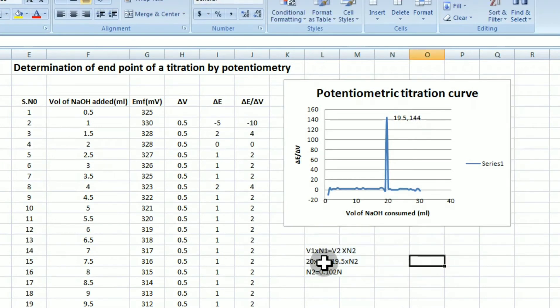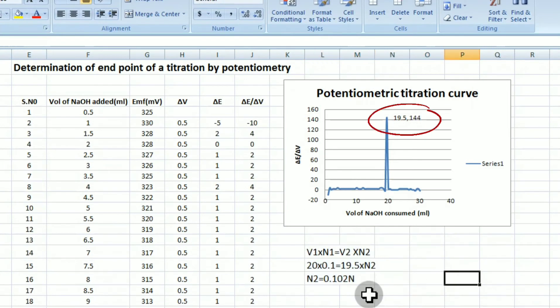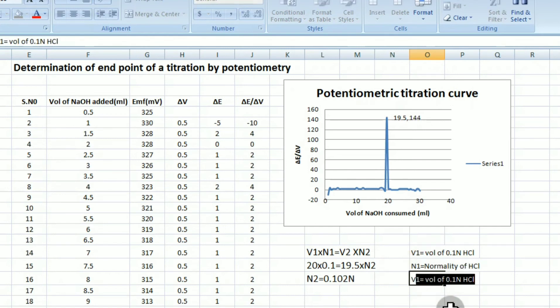When you put the cursor at the tip of the peak, you can see the volume that is required to get the endpoint. That is, the particular graph shows 19.5 ml. When 19.5 ml of sodium hydroxide has been consumed, the endpoint has been reached. It is 19.5 ml as shown in the curve.